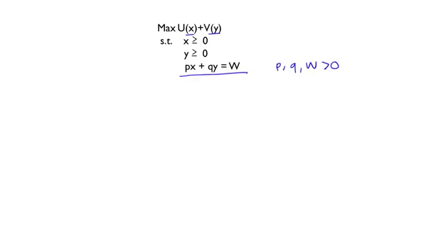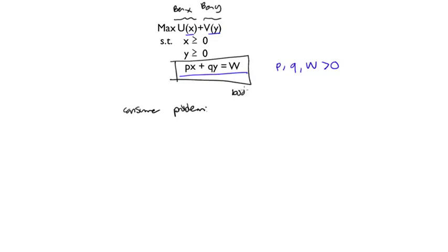Why is it such an important problem in economics? Because it basically looks like a more general version of a consumer problem, in which you can think of u and v as the benefit functions for x and y, and you can think of this as a budget constraint. If P is the price of good x, this is how much you spend on good x; if Q is the price of good y, this is how much you spend on good y, and W is the total wealth of the consumer.